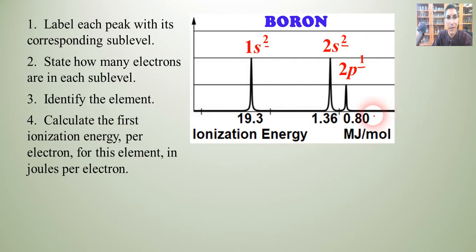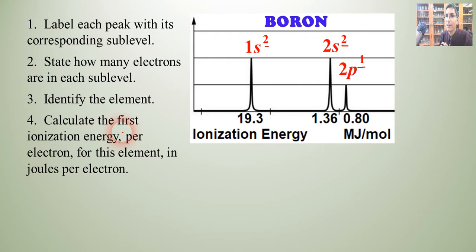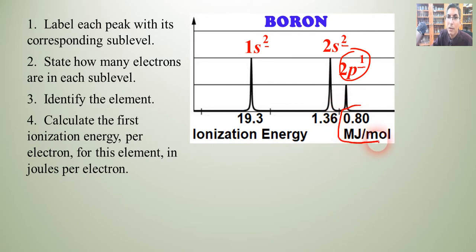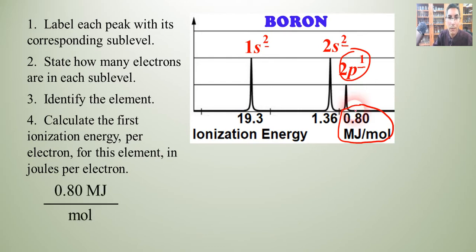The fourth part is a little harder. We're going to calculate the first ionization energy per electron for this element in units of joules per electron. The first ionization energy involves how much energy it takes to pull away the very last electron — in this case, the 2p electron. So we're going to use the value 0.80 megajoules per mole and convert it to joules per electron.